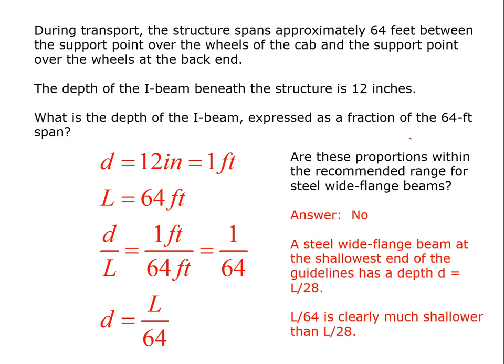So here are the kind of questions that we want to ask ourselves. During transport, the structure spans approximately 60 feet between the support point over the wheels of the cab and the support point over the wheels of the back end. The depth of the I-beam beneath the structure is 12 inches. What is the depth of the I-beam expressed as a fraction of the 64 foot length? So we're saying the depth is equal to one foot. The length is 64 feet. So when we take a ratio of d over L, it's one foot over 64 or one over 64. And when we take L up here, we get d is equal to L over 64.